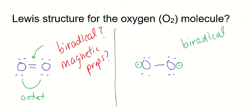But if you look at this structure on the right, it's like each atom — each of those oxygens — they have seven valence electrons. That's no good.